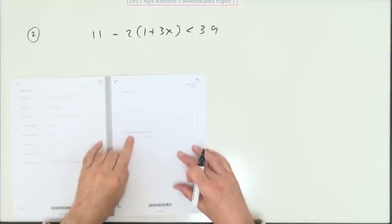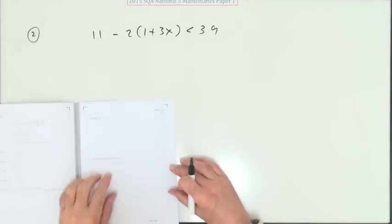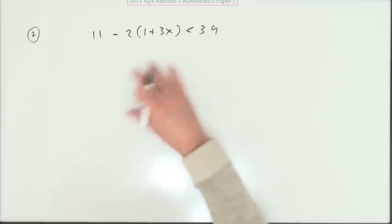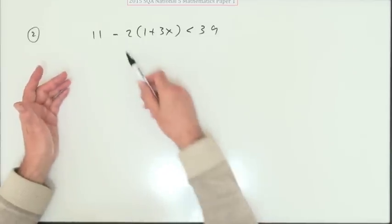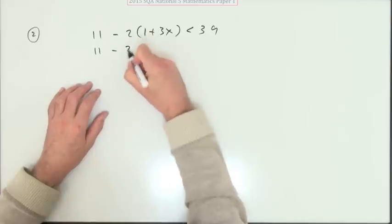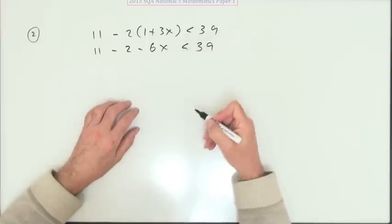So here this next one, solve algebraically. That means no guessing the answer. Solve algebraically this inequality. Well you still just do it the same way as an equation. So the first thing is going to be let's multiply out the brackets. So we've got 11 minus 2 minus, and that'll be two threes or 6x is less than 39.